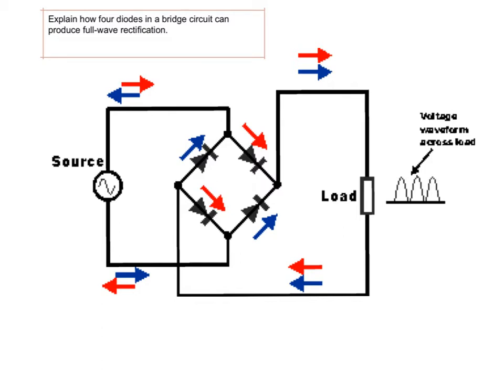But how do we convert that into DC? You're going to have to follow my laser pointer. Now imagine that the electricity from the source is flowing clockwise for the moment — we follow the red arrow. It reaches the bridge, where there are two directions the electricity could flow. Looking at the diodes, the electricity cannot flow backwards through the diode.